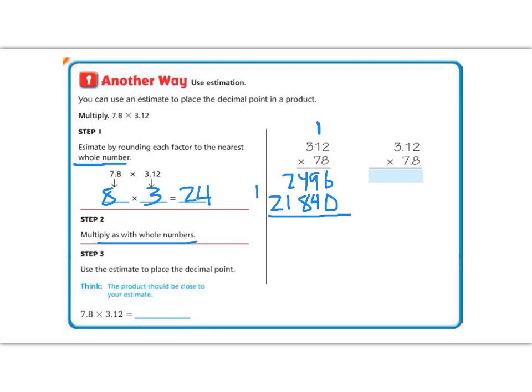And now I'm going to add them together. 6 plus 0 is 6, 9 plus 4 is 13, carry the 1, 8 plus 4 is 12 plus 1 more is 13, carry the 1, 2 plus 2 is 4, and then bring down the 2. So if we had no decimals this would be our answer, but remember we said our estimate should be about 24.